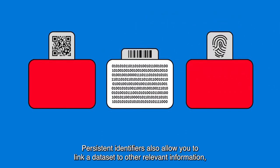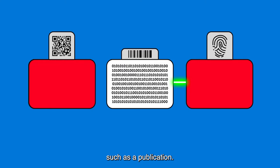Persistent identifiers also allow you to link a data set to other relevant information, such as a publication.